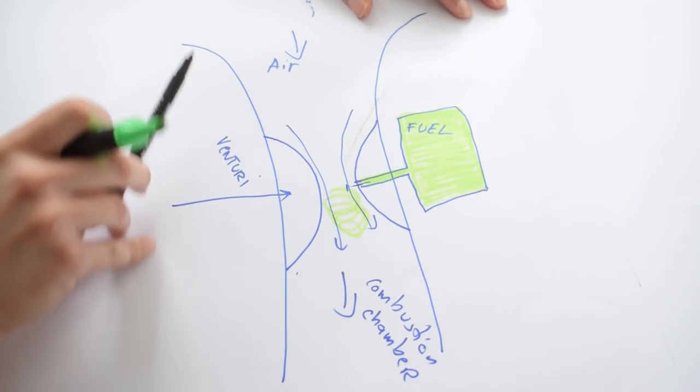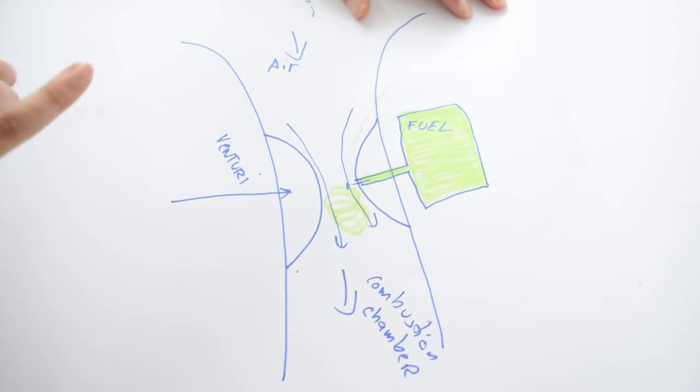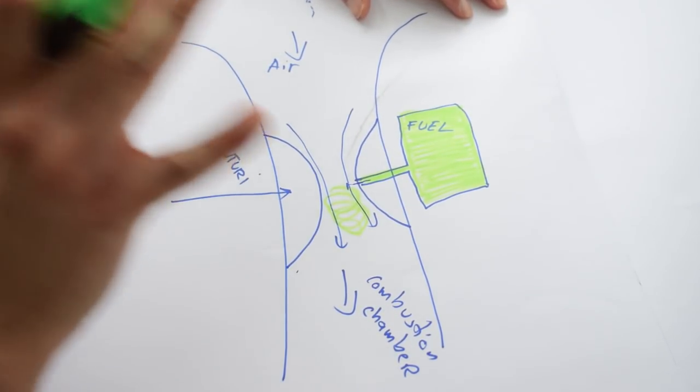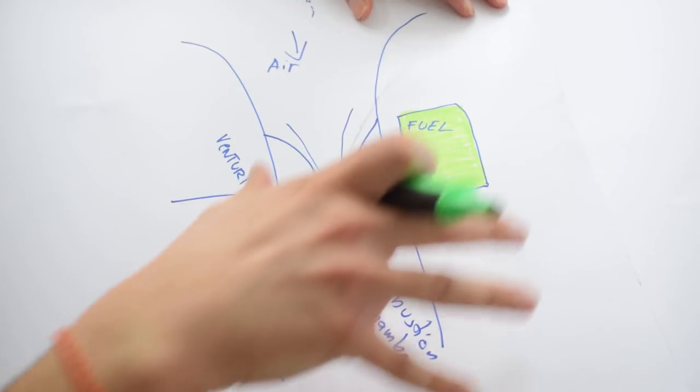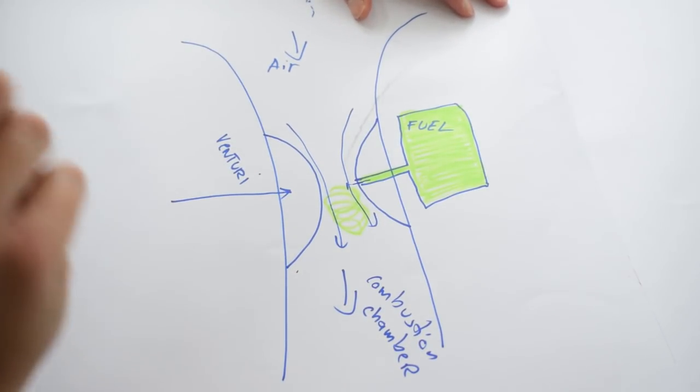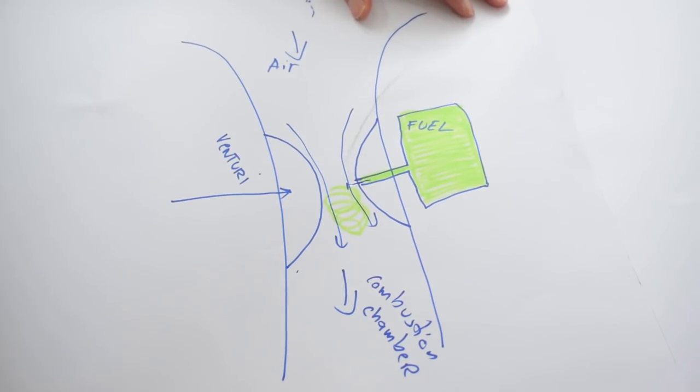Now this is an oversimplified explanation of how every carb works. So now let's take a look at something more advanced, more evolved, but that still utilizes these same principles, and that's the CV or constant velocity carb.